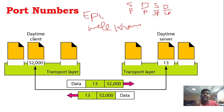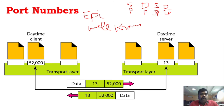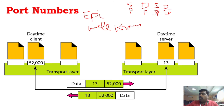Ephemeral port numbers are random port numbers assigned dynamically. Well-known port numbers are already assigned. For example, the date and time server uses port number 13. These are pre-assigned well-known port numbers that are standardized.